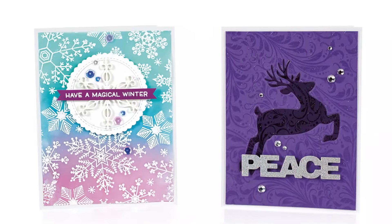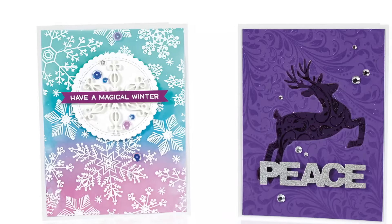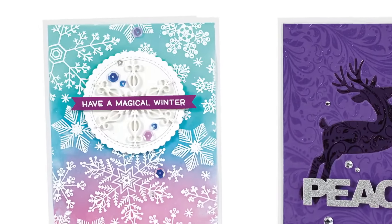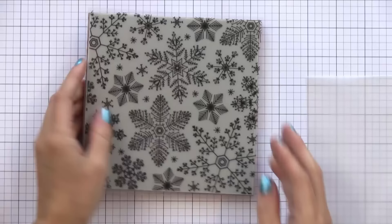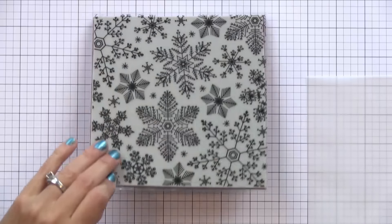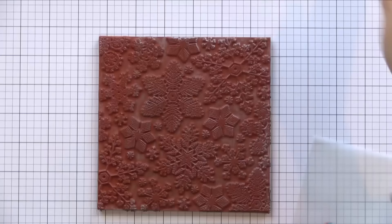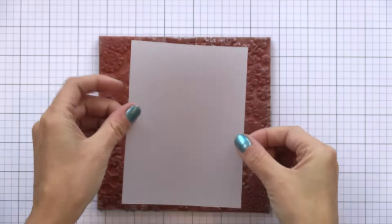I'm going to start with the card on the left here that says Have a Magical Winter. For this I used a background stamp on a piece of vellum and added some soft color. For this card I'm using a background from Hero Arts. It's a gorgeous snowflake pattern.